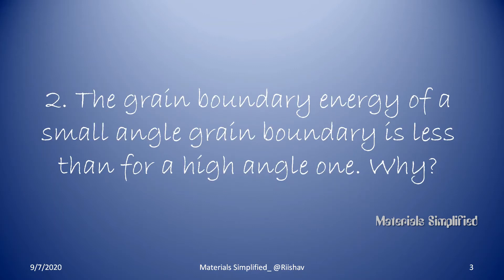Next question: the grain boundary energy of a small angle grain boundary is less than for a high angle one — why? Small angle grain boundary energy is lower because more atoms will bond across the boundary. When the angle is very small, bonding probability is higher. When the angle is larger, fewer atoms bond with each other, resulting in more unsatisfied bonds and thus higher grain boundary energy for high angle boundaries.